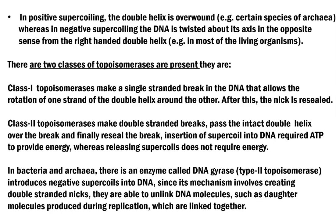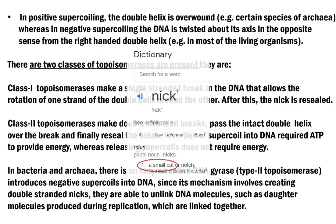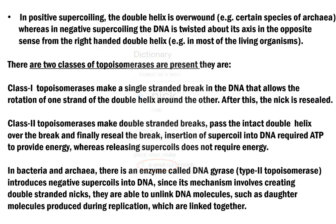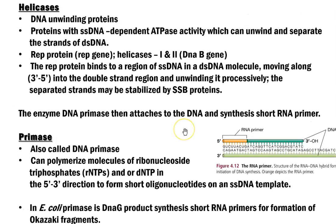In bacteria and archaea, there is an enzyme called DNA gyrase, also called type 2 topoisomerase, which introduces negative supercoils in the DNA. Since its mechanism involves creating a double-stranded nick — nick referring to cuts — it is able to unlink DNA molecules such as daughter molecules produced during the course of replication, that is during cell multiplication.